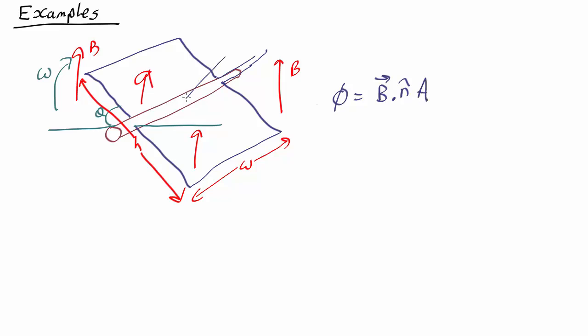So the normal vector is going to point in that direction and that angle there is going to be theta, just the same as this angle here. So this is going to be equal to the strength of the magnetic field times the area which is just height times width times cos theta from the dot product of these two.